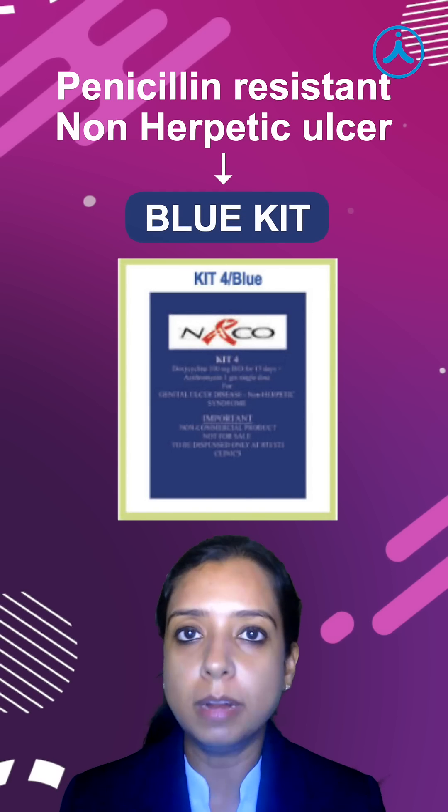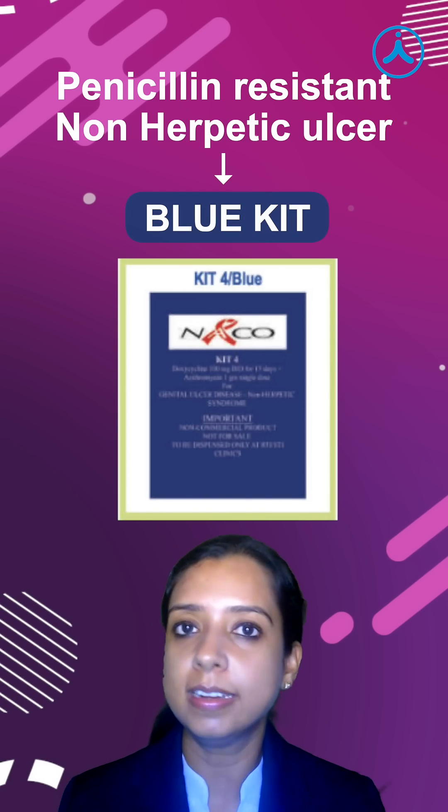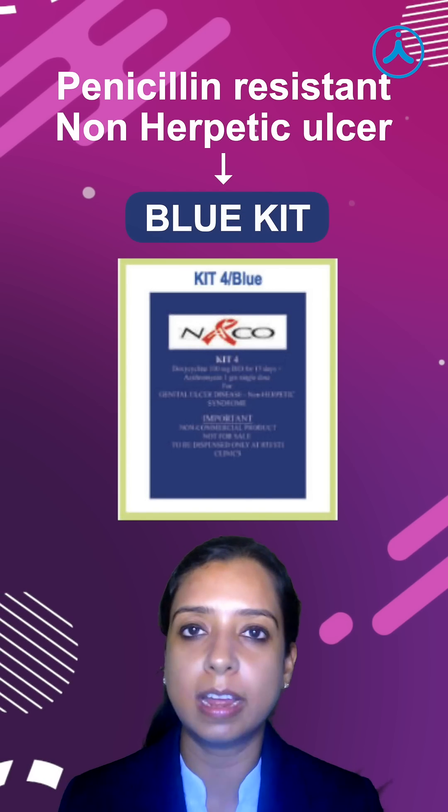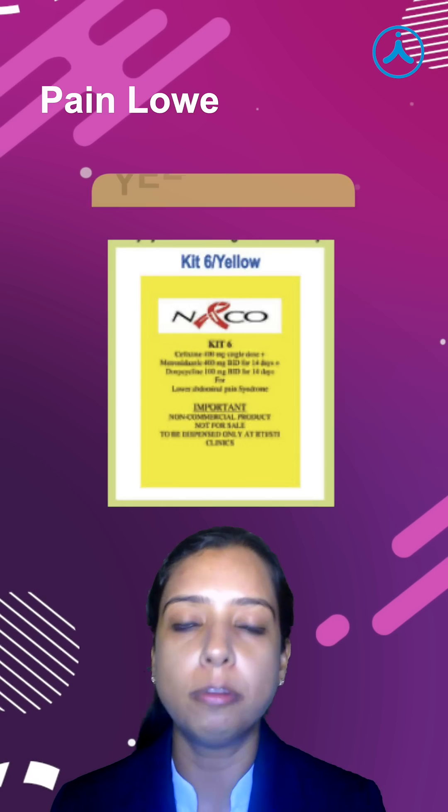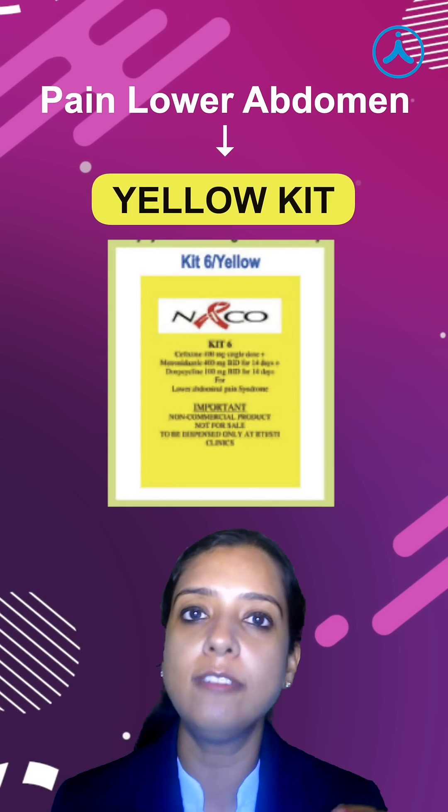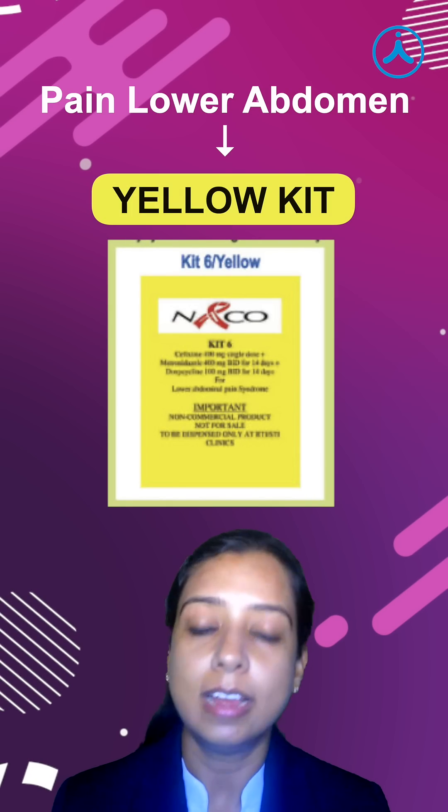For abdominal pain, there is a phrase we use to describe pain: "Dar se lal peela hona." Lal is already done, so peela — for pain abdomen, we have yellow kit.